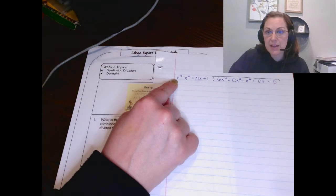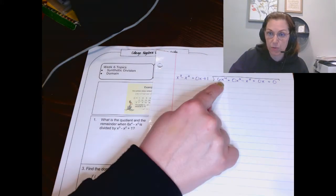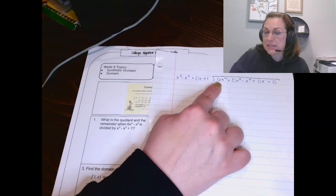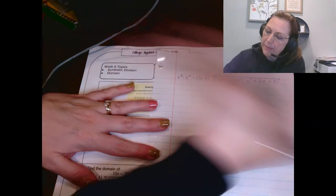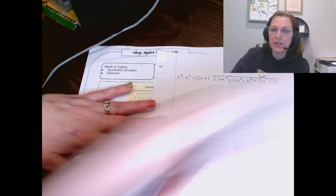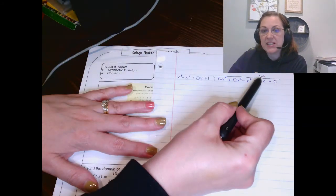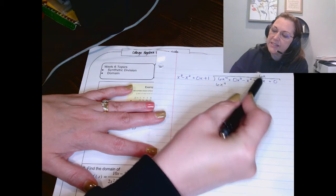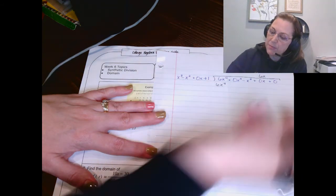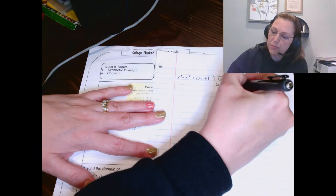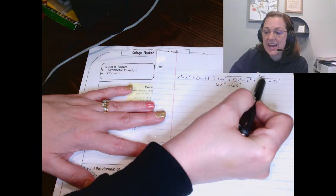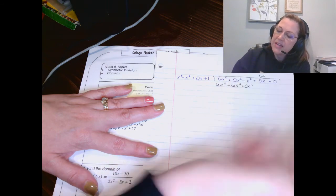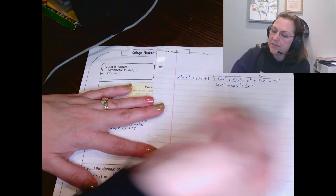So now we ask ourselves, what times X cubed would give me 6X to the fourth? Let me say that again. What times X cubed would give me 6X to the fourth? That has to be 6 times X. Now I'm going to line it up over the X term just for place value. And now we multiply. 6X times X cubed gives me 6X to the fourth. 6X times negative X squared gives me minus 6X cubed. 6X times 0X gives me 6X squared. 6X times 1 gives me 6X.